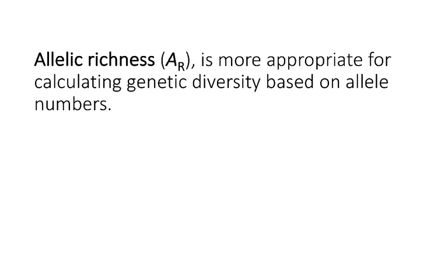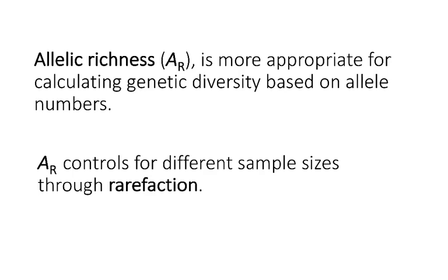If you do want to use alleles to estimate genetic diversity, a better way is to use the metric called allelic richness, or A sub R. This is more appropriate for calculating genetic diversity based on allele numbers because it controls for different sample sizes through a process called rarefaction. This is used commonly in ecology where you're looking at species richness for different samples, and what this method does is correct for bias that can creep in as a result of uneven sample sizes.